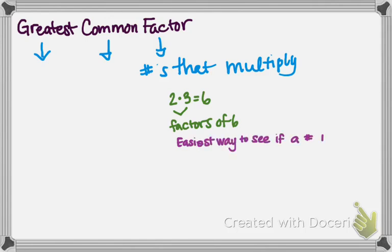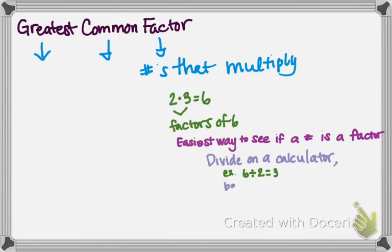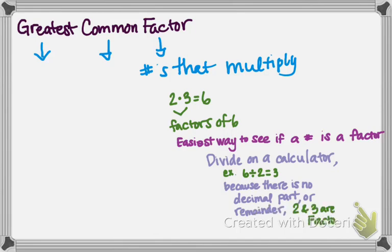So the easiest way to see if a number is a factor is to divide on a calculator. For example, let's use 2 and 3 again. So on a calculator, I would do 6 divided by 2, and the calculator would tell me 3. Because it's a 3 and it's a whole number, there's no decimal part or remainder, that means that 2 and 3 are both factors of 6.